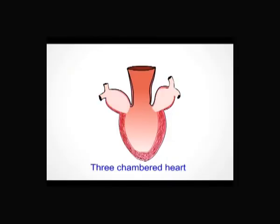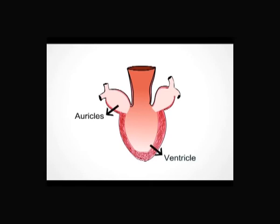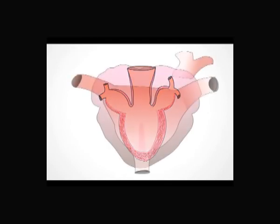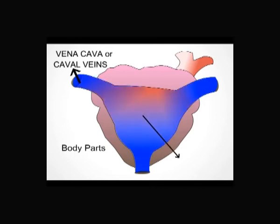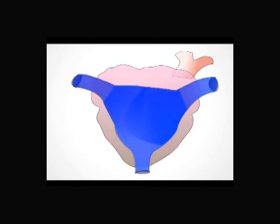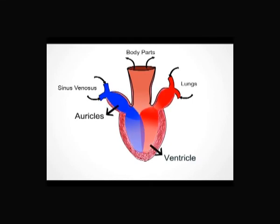In amphibians, the heart has three chambers — two auricles and one ventricle. The auricles are side by side, separated by a muscular wall, and the ventricle is behind them. Deoxygenated blood from the body is collected into three large caval veins, which unite to form the sinus venosus, opening into the right auricle. The right auricle collects deoxygenated blood, while the left auricle receives oxygenated blood from the lungs through the pulmonary vein. Both auricles open into the ventricle.